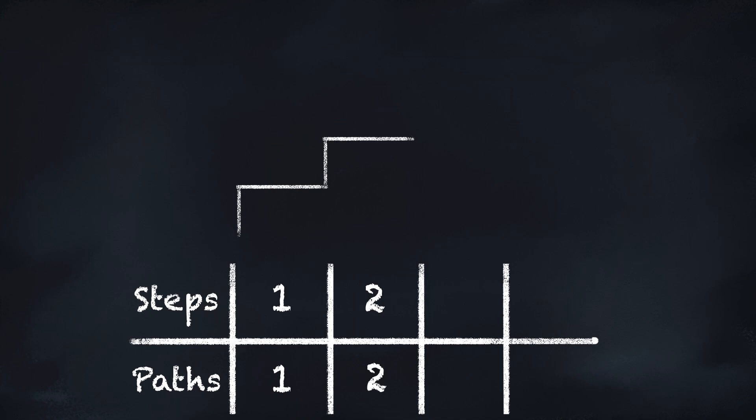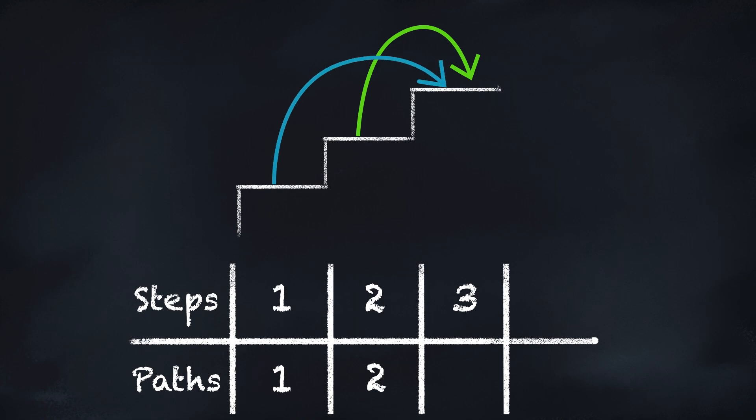Then we move to the third stair. We can arrive at this step by taking one step from the previous stair — this already gives us two ways, because we had two ways to reach the second stair. We can also arrive at the third stair by taking two steps from the first stair, adding one more way, giving us a total of three ways to get to the third step.